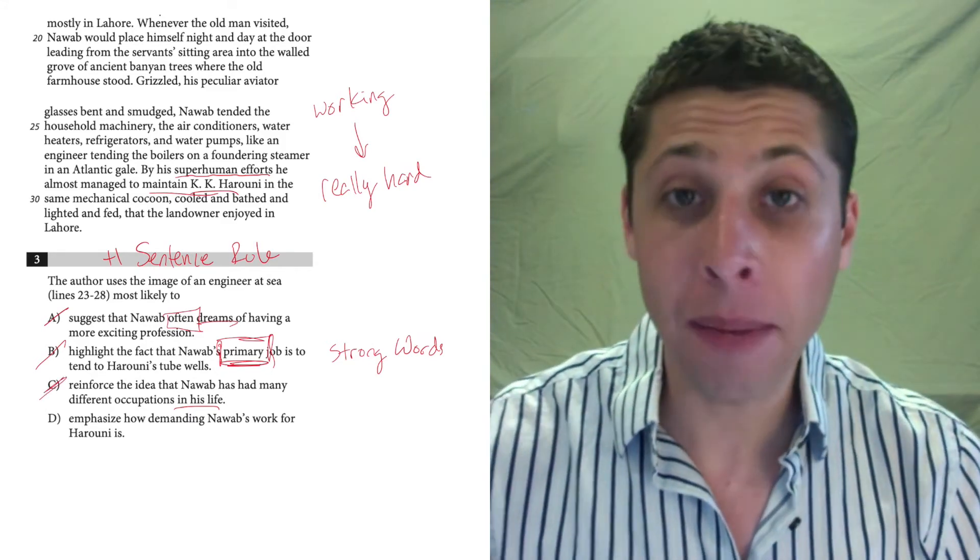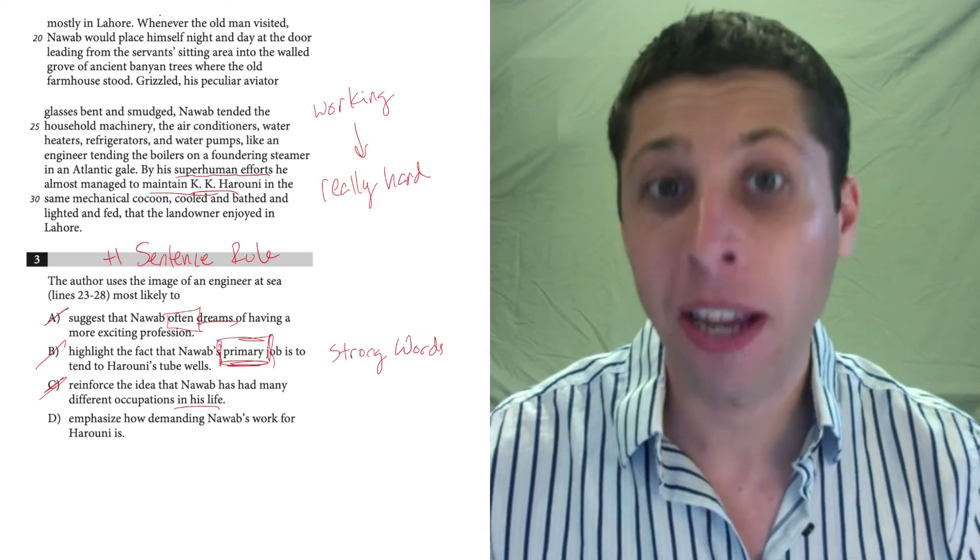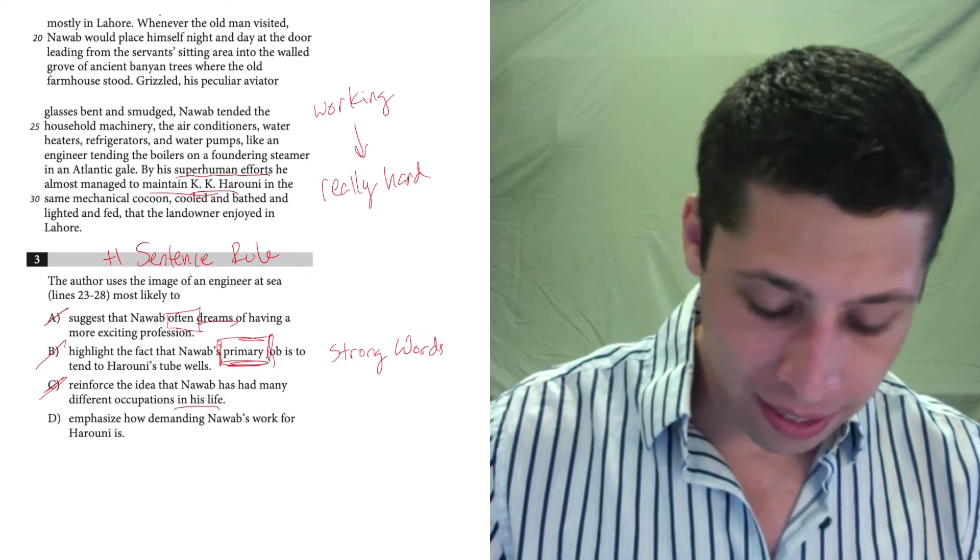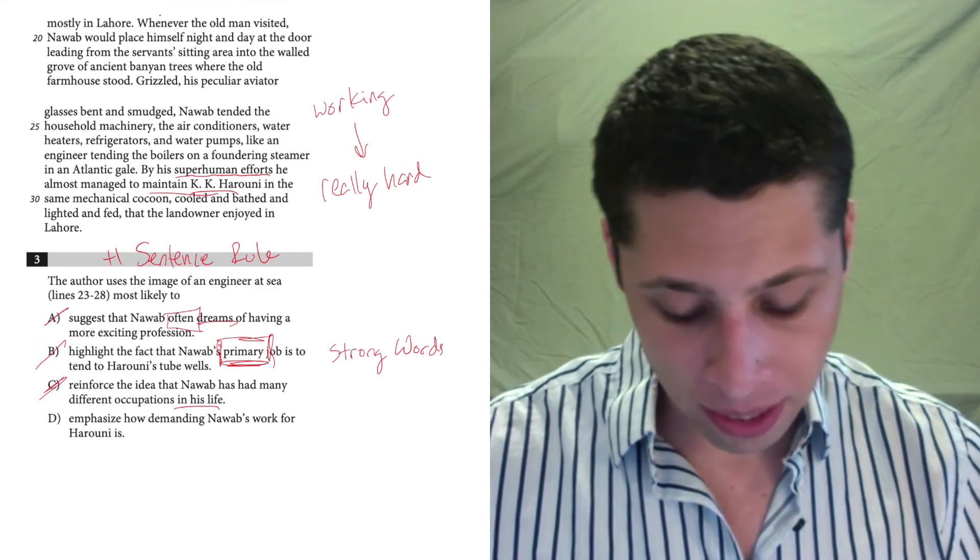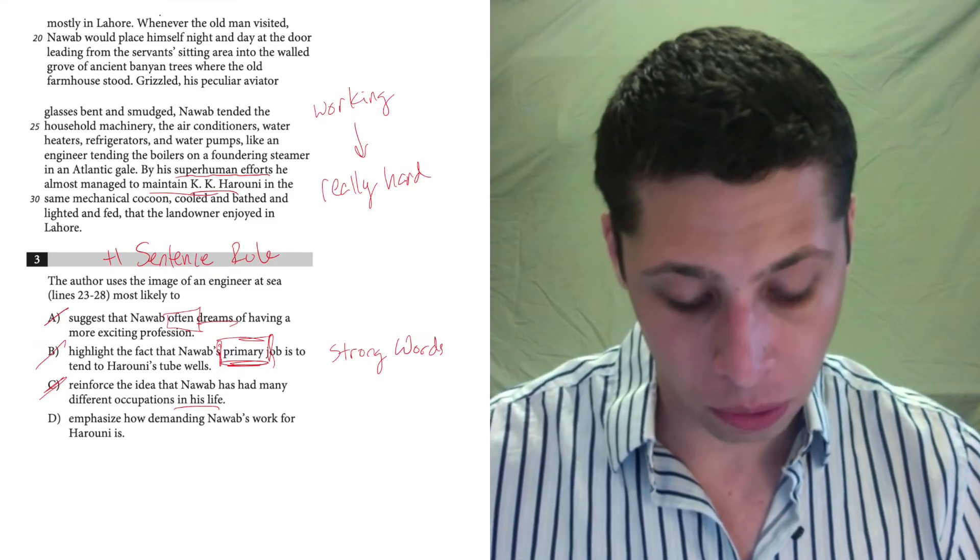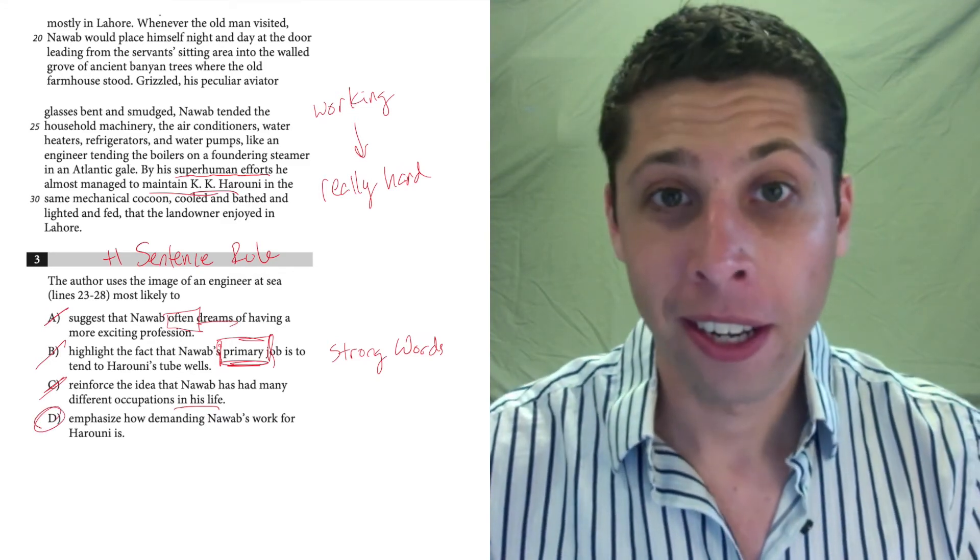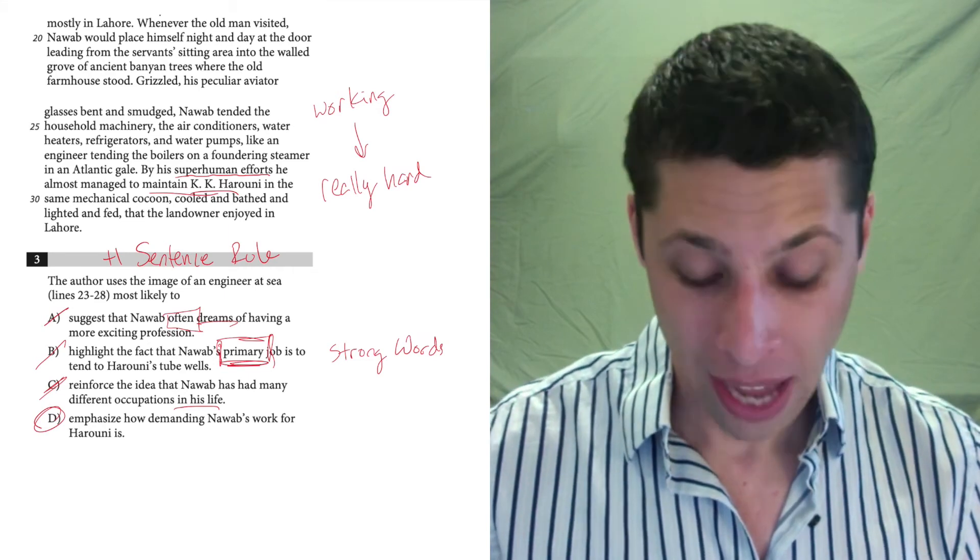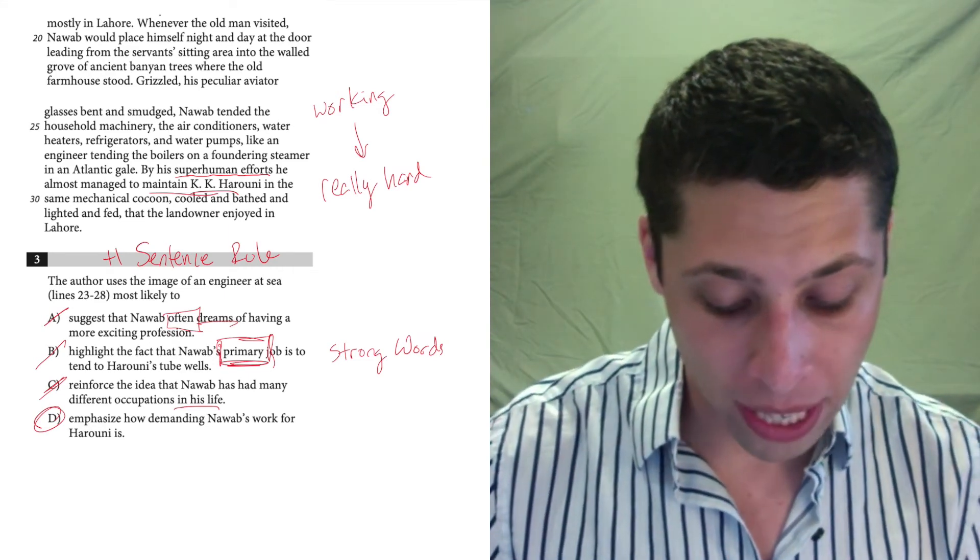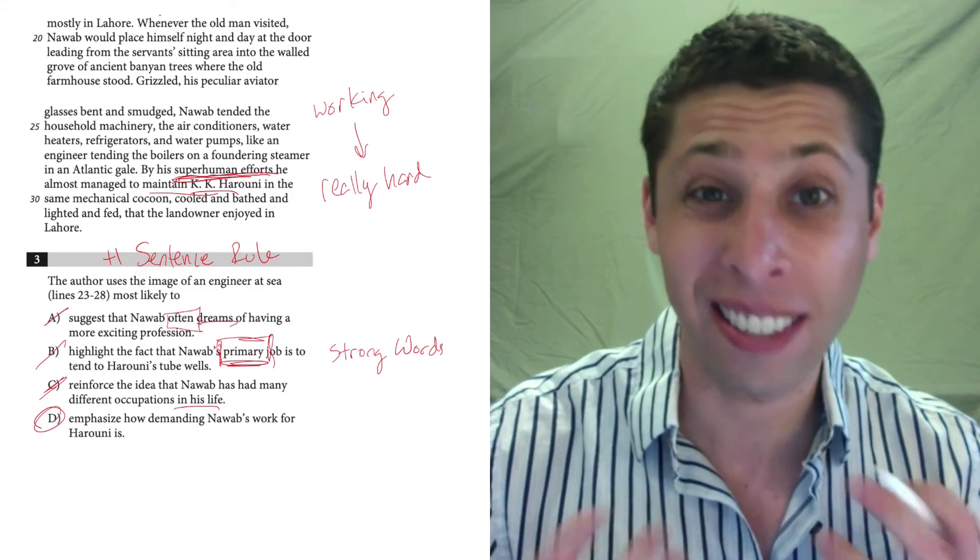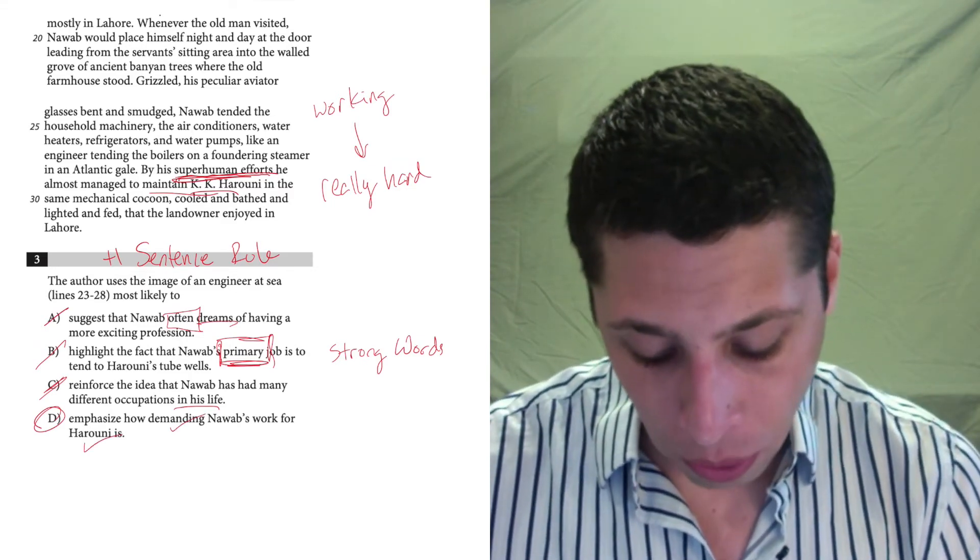So that's going to leave us with D. But as always, we should read it to make sure. Don't just pick D because it's the last thing left. Make sure. And in this case, it matches pretty clearly, pretty closely with what we said, emphasize how demanding Nawab's work for Haruni is. So yeah, he's working as a superhuman to keep this guy Haruni comfortable. And so it's really demanding. We see this big list of things that he's doing. We get the fact that it's an intense effort that he's putting in. There's a lot of matches with what we're reading. We've got Nawab's work. We know it's demanding. We know it's for Haruni.